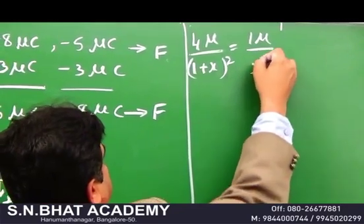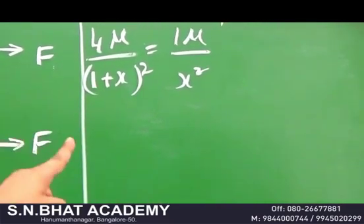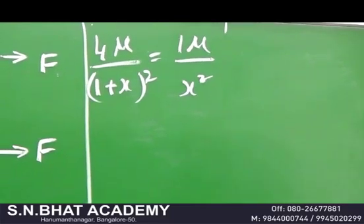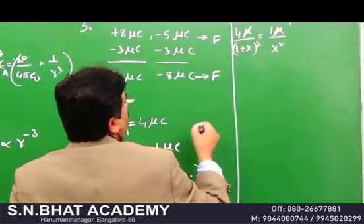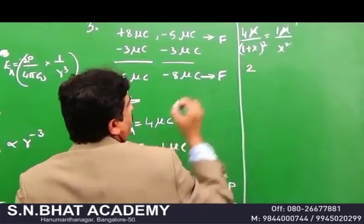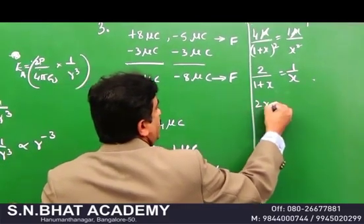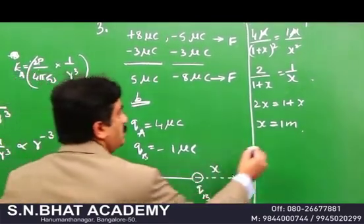Taking square roots: 2/(1+x) = 1/x. Cross-multiplying: 2x = 1 + x, so x = 1 meter. The null point is 1 meter from charge B. The answer is option D.